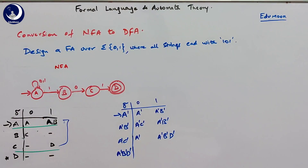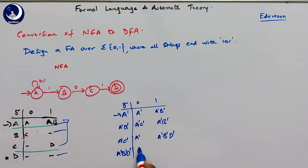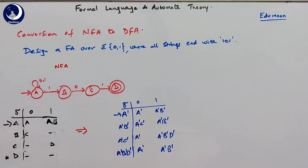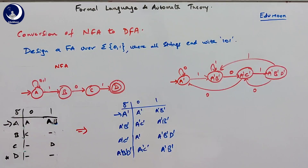For A dash B dash D dash on zero, comparing these three states gives A dash; on one gives A dash B dash. At this point, no new combinations appear in the table, meaning the remaining 12 combinations are unreachable from the initial state. We stop the conversion here. Writing the transition diagram for the obtained table produces a diagram that is exactly the same as the DFA with PQRS states shown at the start of this video.